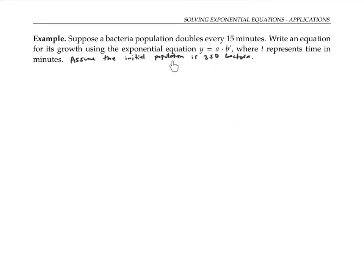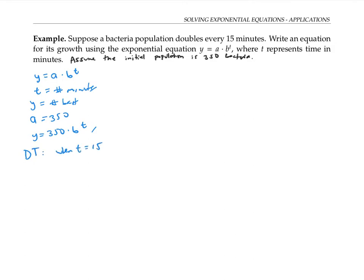In this next example, we're told the initial population and we're told the doubling time. We're not told by what percent the population increases each minute, so we're going to have to solve for that. I want to use an equation of the form y = a times b to the t, where t is the number of minutes and y is the number of bacteria. I know that my initial amount a is 350, so I can write y = 350 times b to the t. The doubling time tells me that when 15 minutes have elapsed, my population is going to be twice as big, or 700. Plugging that into my equation, I have 700 = 350 times b to the 15. Now I need to solve for b.